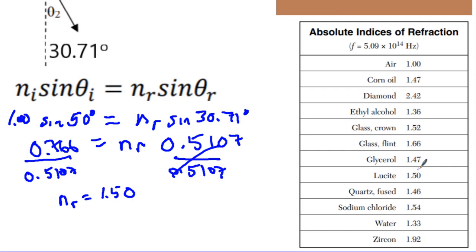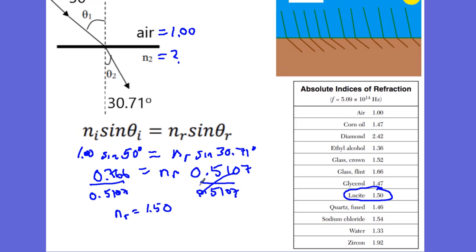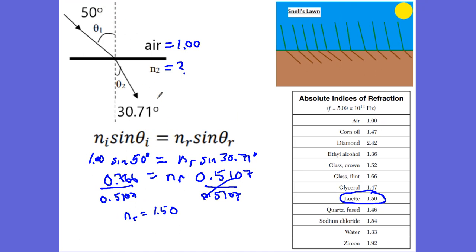I can look and that is going to be lucite glass right there. So that is when we've been given one angle and another angle and we're finding the index refraction.